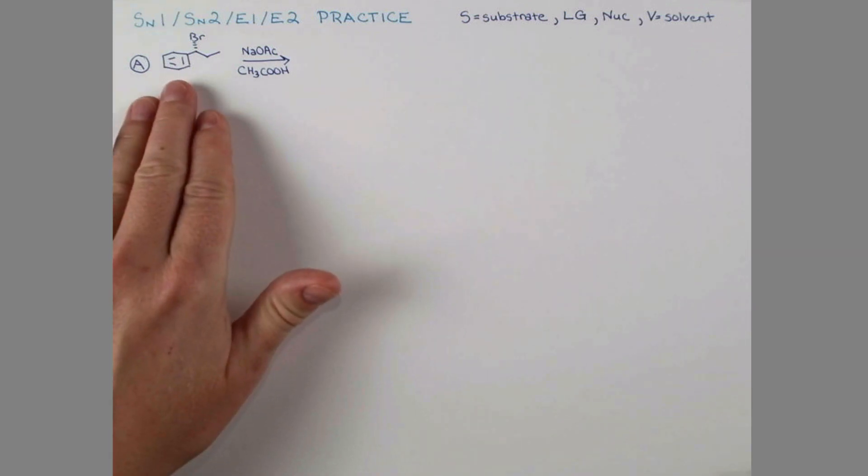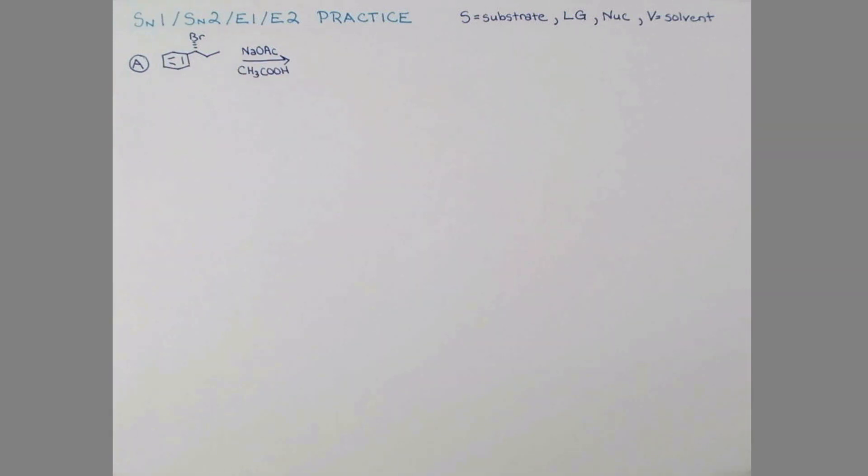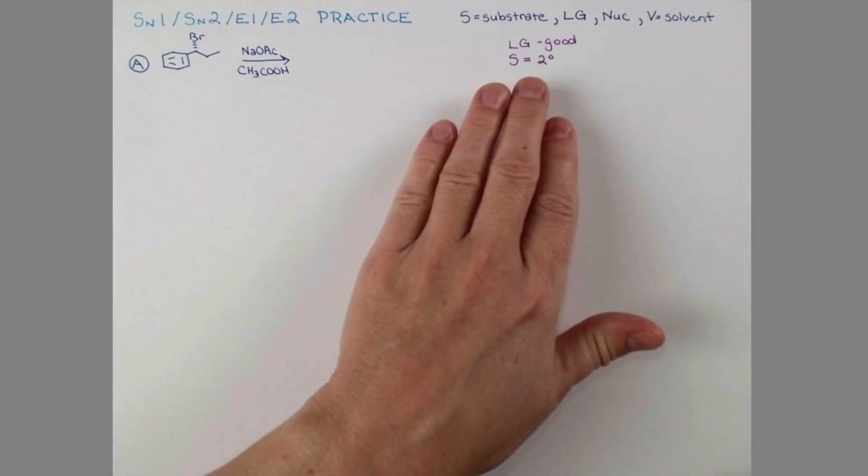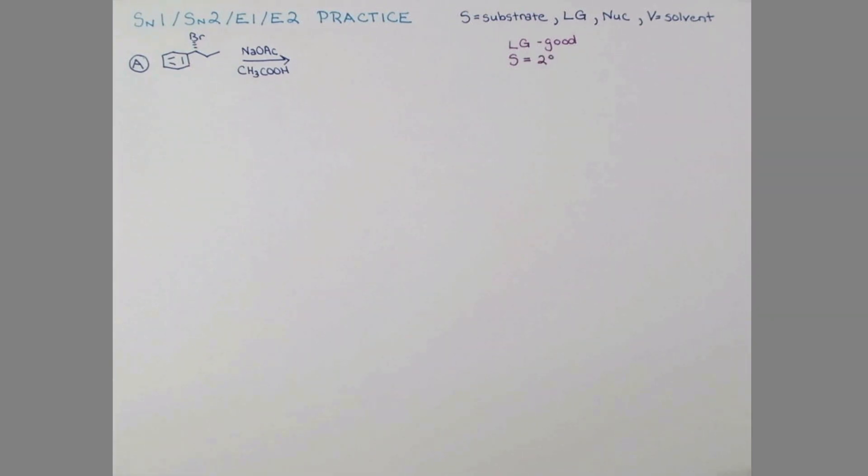Let's tackle our first problem together. Here we're treating this bromide with sodium acetate and acetic acid. Let's consider the leaving group first. The leaving group is a halogen - with the exception of fluorine, halogens are among the best leaving groups. So we have a great leaving group and we know substitution and elimination can occur. Next, let's consider the substrate structure, the most important factor in figuring out the mechanism. Is this primary, secondary, or tertiary?